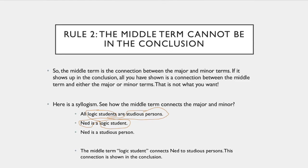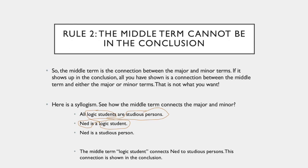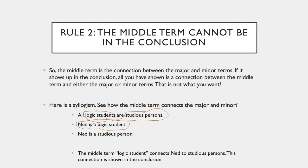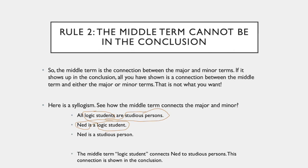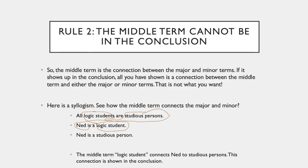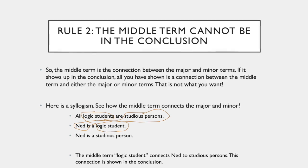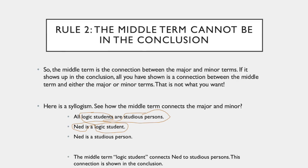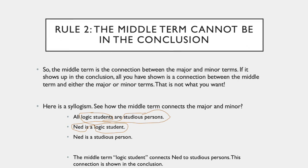So here's a syllogism. You can see how the middle term connects the major and minor. You have all logic students, or studious persons, Ned is a logic student, and then you have that minor and major term connected. Ned is a studious person, and what connected them was that middle term, logic students.